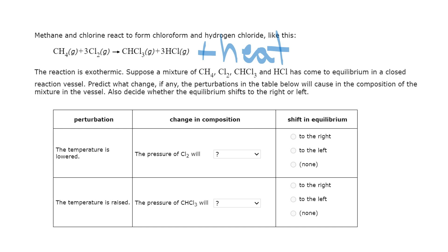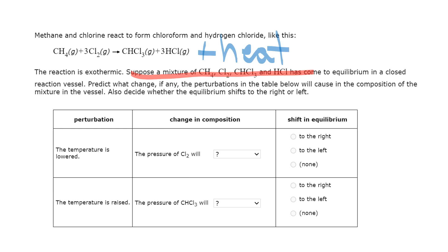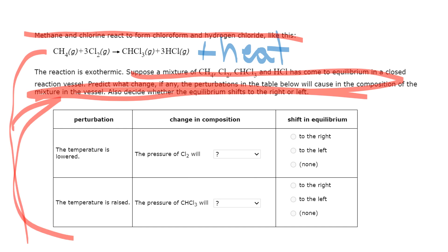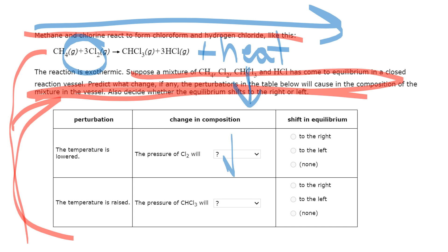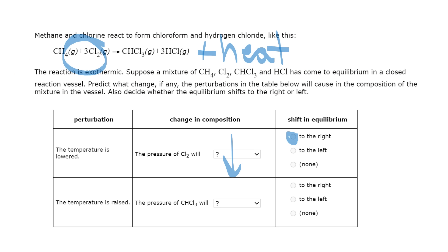The temperature is lowered — heat is now lowered. Heat is a product. When something is lowered, it shifts in the direction to make up for the fact that it's lowered. Answer the far right question first: heat is lowered, temperature is lowered, it shifts to the right. If it shifts to the right, there's going to be less Cl2, so the pressure of Cl2 will go down. The temperature is higher — these follow a pattern, which is good because that's how you learn.